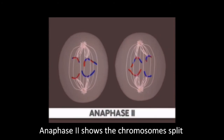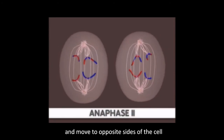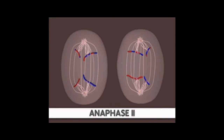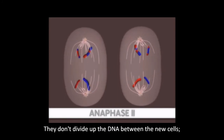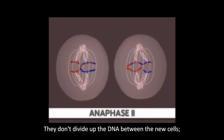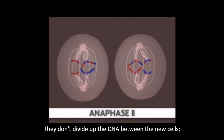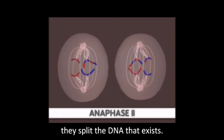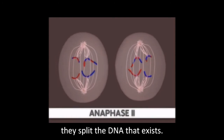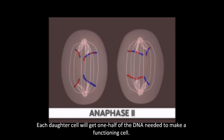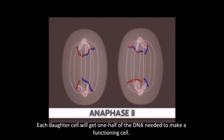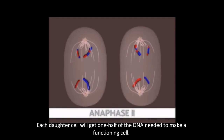Anaphase two shows the chromosomes split and move to opposite sides of the cell. Each one splits into two pieces. They don't divide up the DNA between the new cells — they split the DNA that exists. Each daughter cell will get one half of the DNA needed to make a functioning cell.